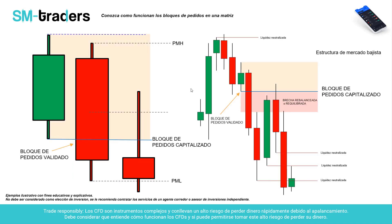En términos de price action, vamos a ver cómo funcionan los bloques de pedidos dentro de una matriz. Los bloques de pedidos —toda esta vela es un bloque de pedidos. Recuerda que teníamos un impulso alcista, se formó la vela verde, y ahora empezamos con un sesgo direccional bajista, consecuencia de velas consecutivas rojas hacia la baja. El bloque de pedidos es esa vela validada —una engulfing candle, en este caso bajista— que cierra por debajo del área sensible o del mínimo de la vela anterior.